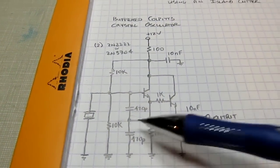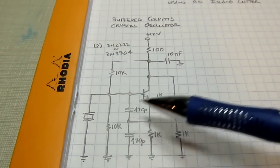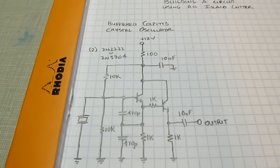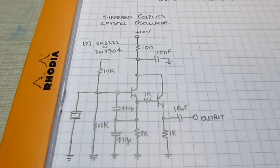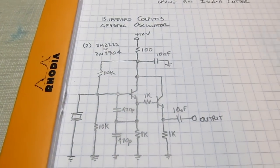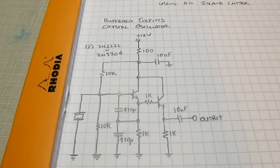So a simple Colpitts crystal oscillator buffered by an emitter follower. A simple enough circuit and a good example, and we'll make a nice test circuit for me to test unknown crystals to be sure they're working.